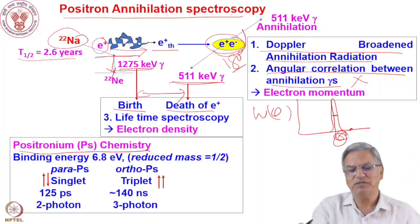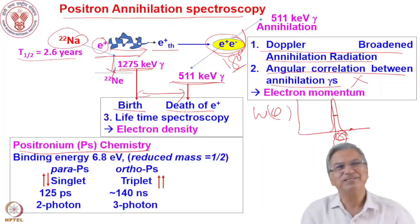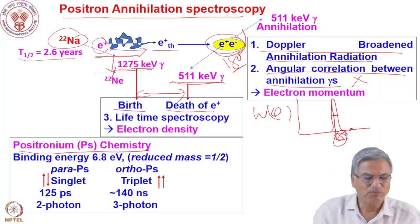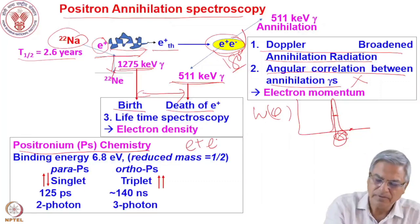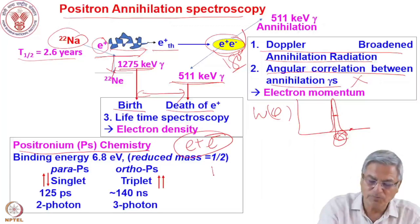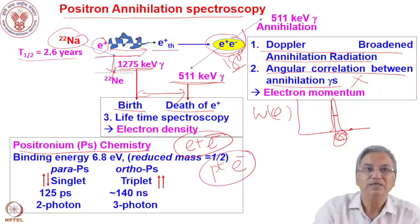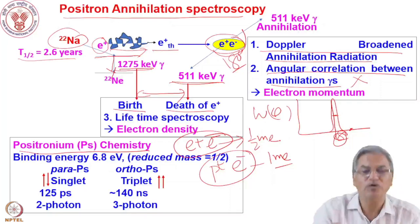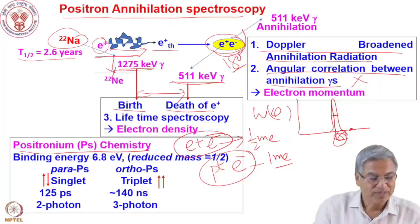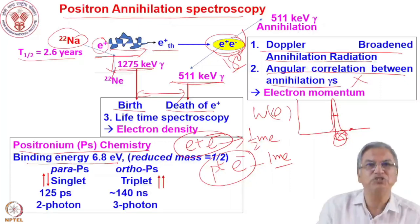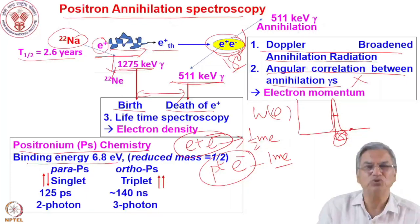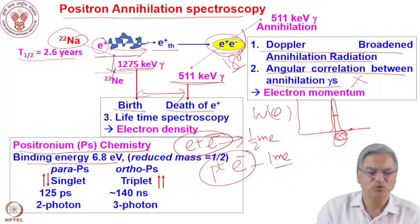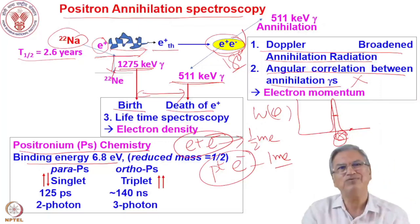Another very interesting field is positronium chemistry — the chemistry of the positronium atom. Positronium is an atom similar to hydrogen. In hydrogen you have a proton and an electron; the reduced mass is one electron mass. The reduced mass of positronium is ½mₑ (M₁M₂/(M₁+M₂)). Accordingly, the ionization potential of positronium is 6.8 eV — half of hydrogen's 13.6 eV. The Bohr radius of hydrogen is 0.53 Å, while the radius of positronium is double that.